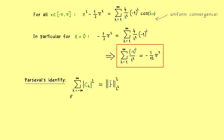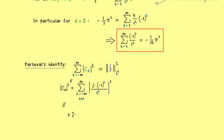On the left-hand side we pull out c₀ separately, since it was an exception in the formula. For all other cases we use what we calculated: 2(−1)^k / k². The (−1)^k vanishes in the absolute value, and similarly to before we split the infinite sum into two parts: 2 times the sum from k = 1 to infinity of 4/k⁴. We also put in what we know of c₀ and square it, giving 4/9 · π⁴.